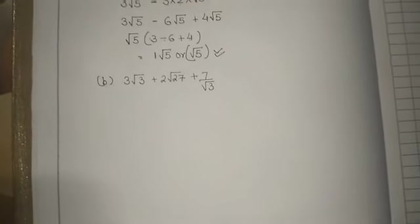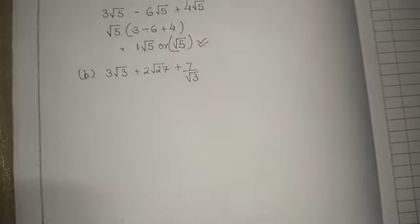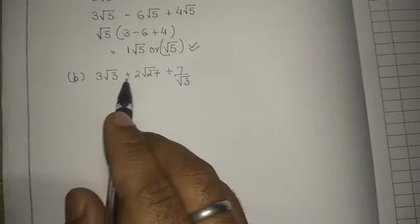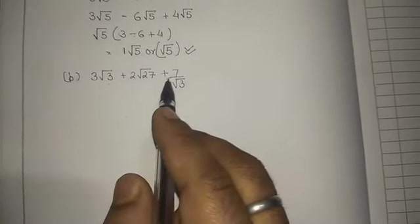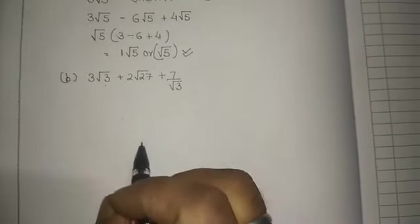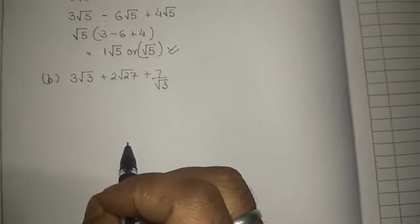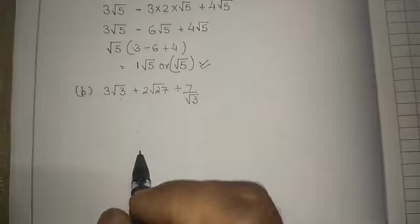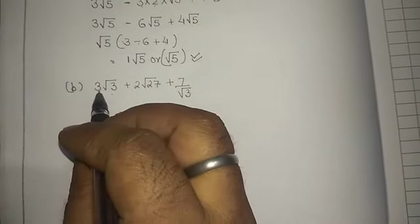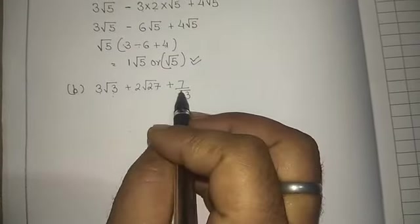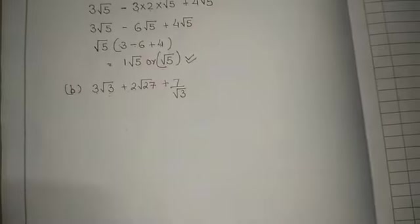So students let's see another question. This is one of the question 3√3 + 2√27 + 7/√3. A simple question. Now you can understand this question by this way. Here root 3, you can see, is more given. So we can take root 3 common.